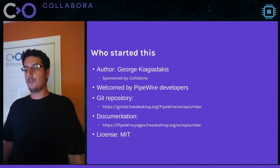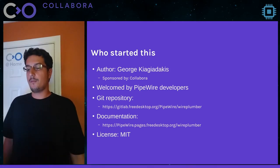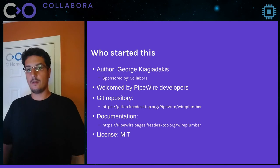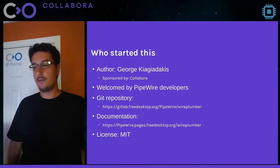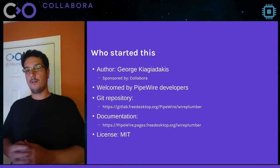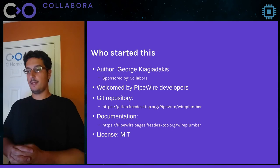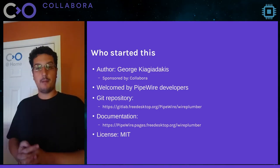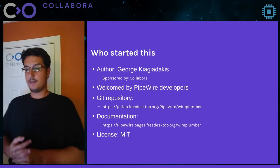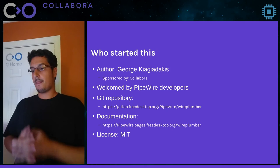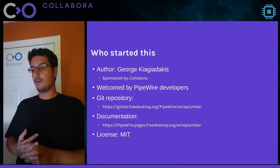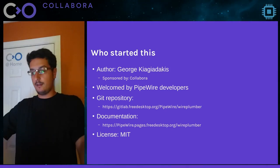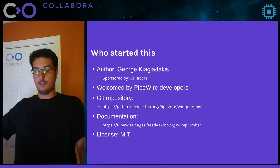The current status of WirePlumber is version 0.3.0. Version 0.1.0 was released in July last year and used in AGL HappyHalibut 8.0. Version 0.2.0 was released December 2019 and used in both AGL HappyHalibut and Icefish. Version 0.3.0 was released June this year — the first release with desktop support. A future release planned for end of year or early next year will include API improvements, scripting bindings, stabilized API, improved documentation, and more unit tests. The owner of the project is George, working at Collabora. The project is sponsored by Collabora, welcomed by PipeWire developers, and licensed under MIT.